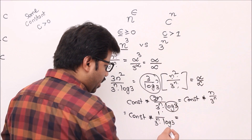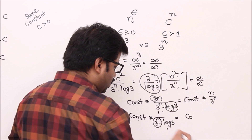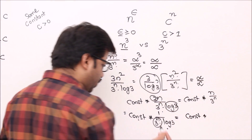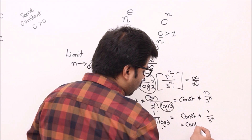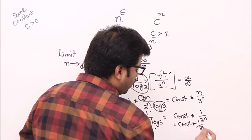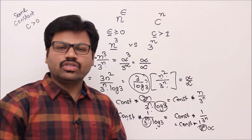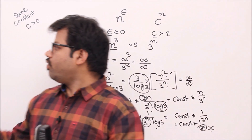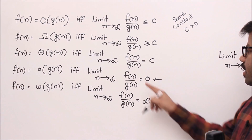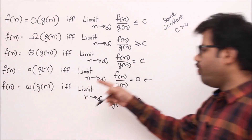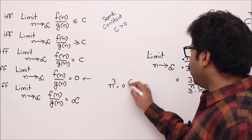Applying L'Hôpital's rule one more time: the derivative of n is 1, and of 3^n is 3^n · ln 3. The result is constant × 1/3^n. As n → ∞, 3^∞ is infinite, so 1/∞ = 0, and constant × 0 = 0. So the final answer is 0. Looking at the formulas, a ratio of 0 matches the small-o definition, so n³ = o(3^n).